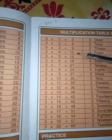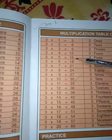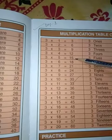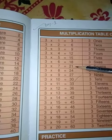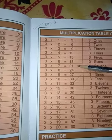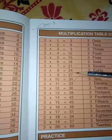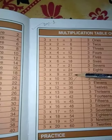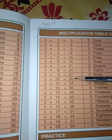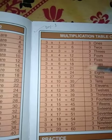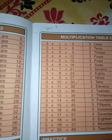Three one's are three, three two's are six, three three's are nine, three four's are twelve, three five's are fifteen, three six's are eighteen, three seven's are twenty-one, three eight's are twenty-four, three nine's are twenty-seven, three ten's are thirty. Students, you will memorize it and write it in your notebook.